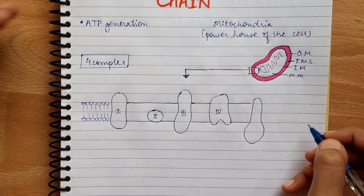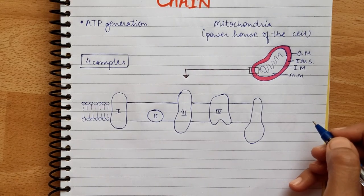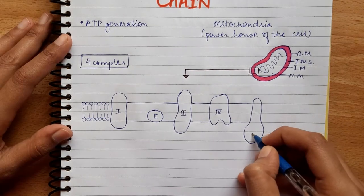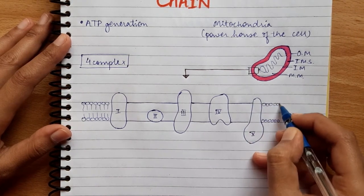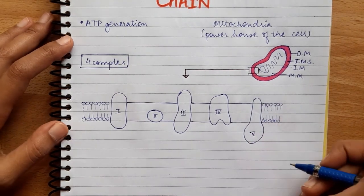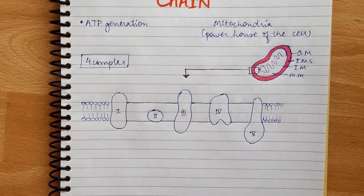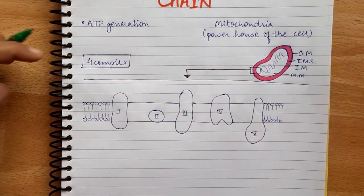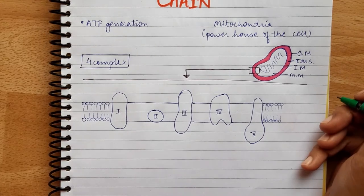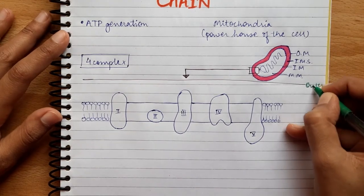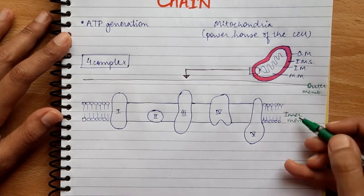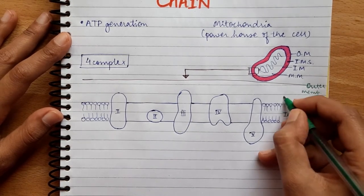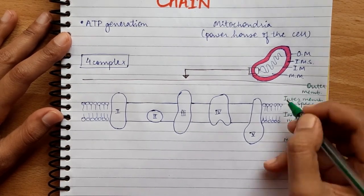The fifth complex is ATP synthase, which sits on the inner membrane as well. So to recap: this is our outer membrane, this is our inner membrane, this is our matrix, and this is our inter-membrane space.